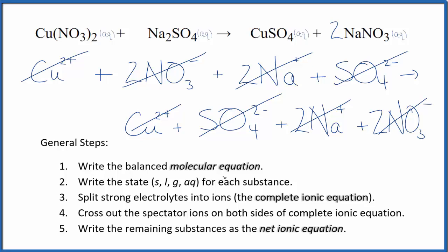So there is no reaction for Cu(NO₃)₂ plus Na₂SO₄. No precipitate is formed. This is Dr. B with the net ionic equation for Cu(NO₃)₂ plus Na₂SO₄. There's no reaction.